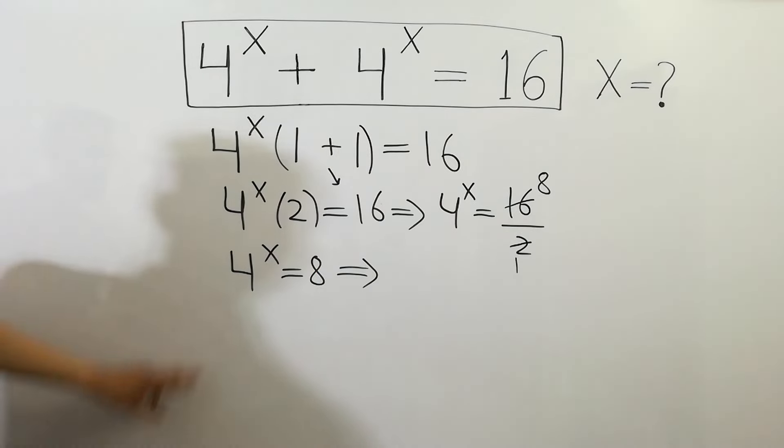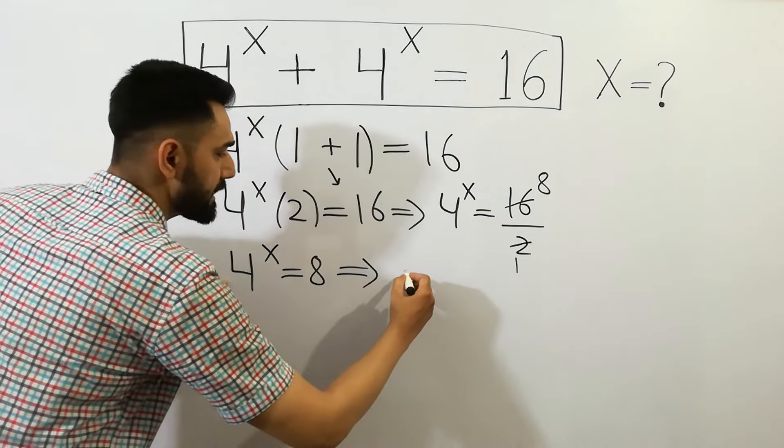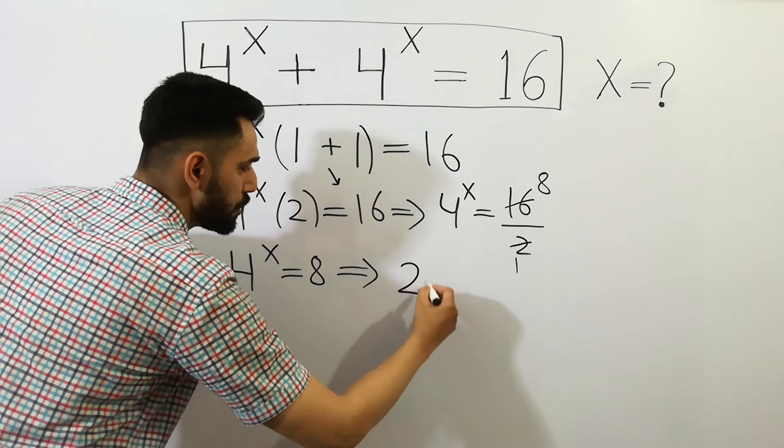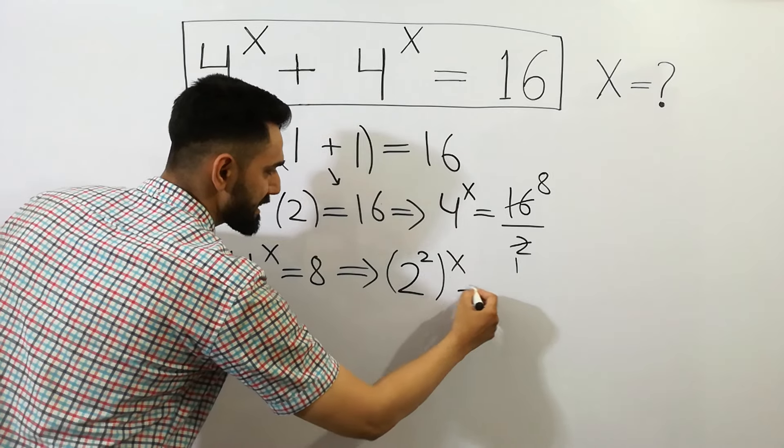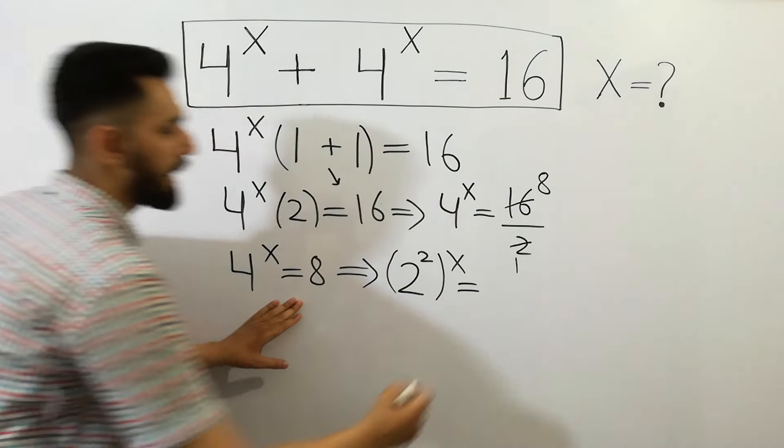As you know, 4 can be written as 2 squared, so 2 squared to the power x equals 8.